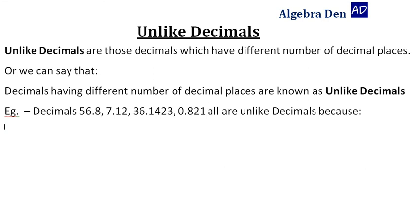decimals 56.8, 7.12, 36.1423, 0.821 all are unlike decimals because 56.8 has one decimal place, i.e. digit 8.